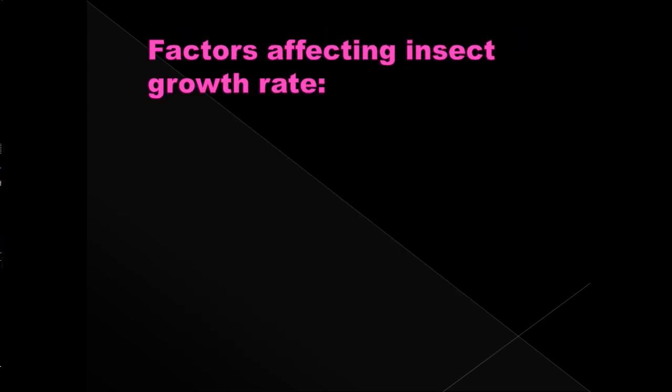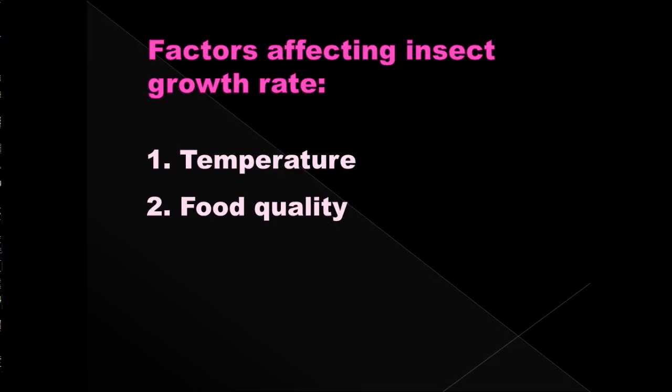Insect growth is influenced by several different factors. One of them is temperature. Just like kids like to go outside and play when it's hot, insects are more active when it's warm outside than when it's cold. Food quality is another factor. If you have something that's protein-rich and good, insects will be more active when they have healthy, protein-rich food.